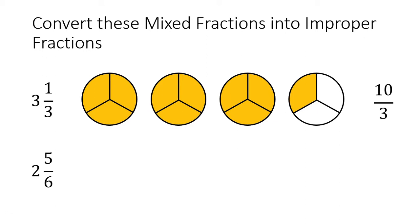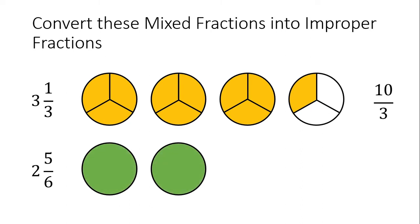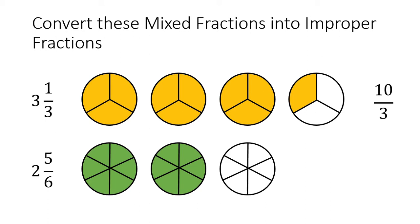The one on the bottom: 2 and 5/6ths. Start by drawing the wholes — one, two. Color them in. Then draw another circle for the parts. It's being divided into sixths, so divide the circles into 6 equal parts. There are 5/6ths, so we color in 5 pieces. Now convert to an improper fraction: the denominator is 6. Counting all pieces: one through seventeen — the numerator is 17. So, 17/6ths.